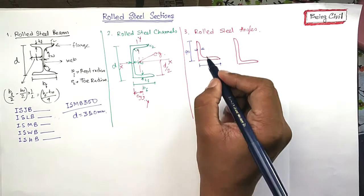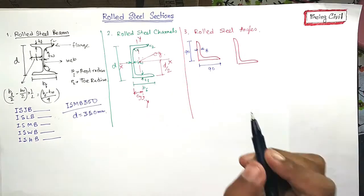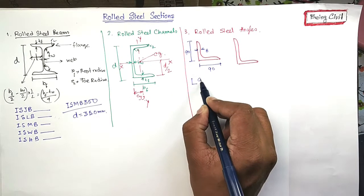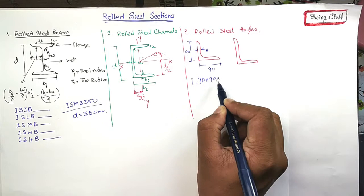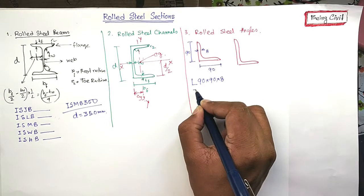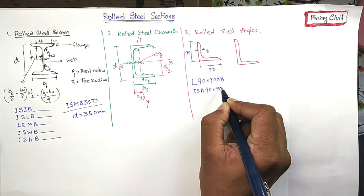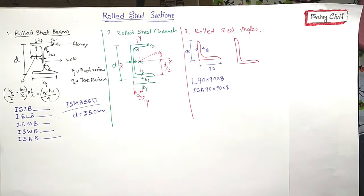This is also 90, and this thickness is 8 mm. So angle is designated as angle 90 by 90 by 8. Or in the code it is written as ISA 90 by 90 by 8.